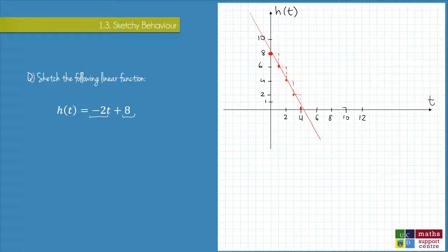Now, to draw a line, we only ever need two points. So we don't have to use this method, although it is actually quite convenient. What we could do is just find one other point and connect the two.